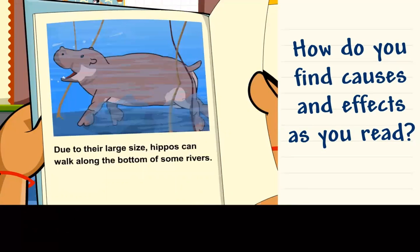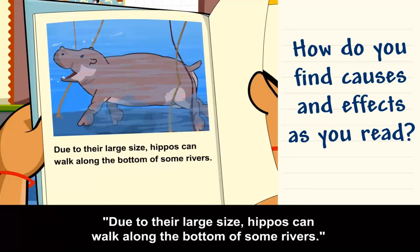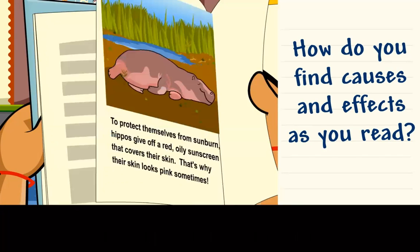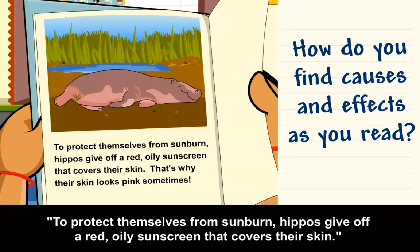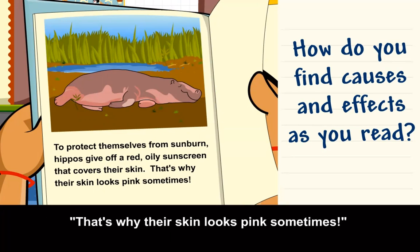Due to their large size, hippos can walk along the bottom of some rivers. To protect themselves from sunburn, hippos give off a red, oily sunscreen that covers their skin. That's why their skin looks pink sometimes.